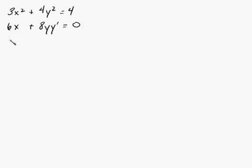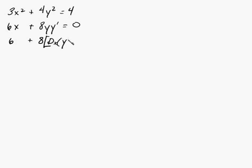So the derivative of 6x is going to be just 6, plus the derivative of 8y·y'. Basically here you're going to use the product rule. So 8 times the derivative of y·y' is equal to 0. Let's go ahead and take the derivative of this.